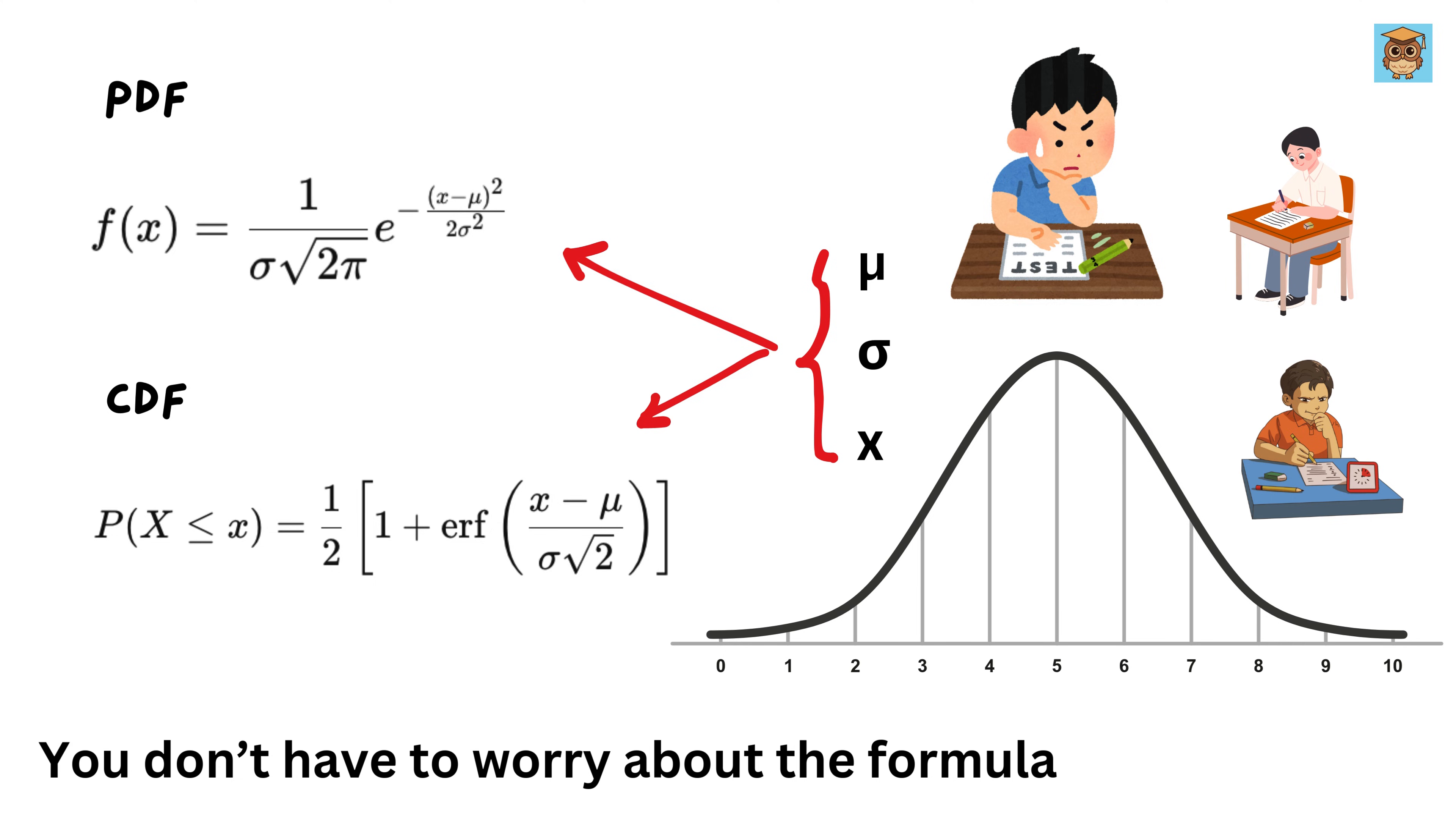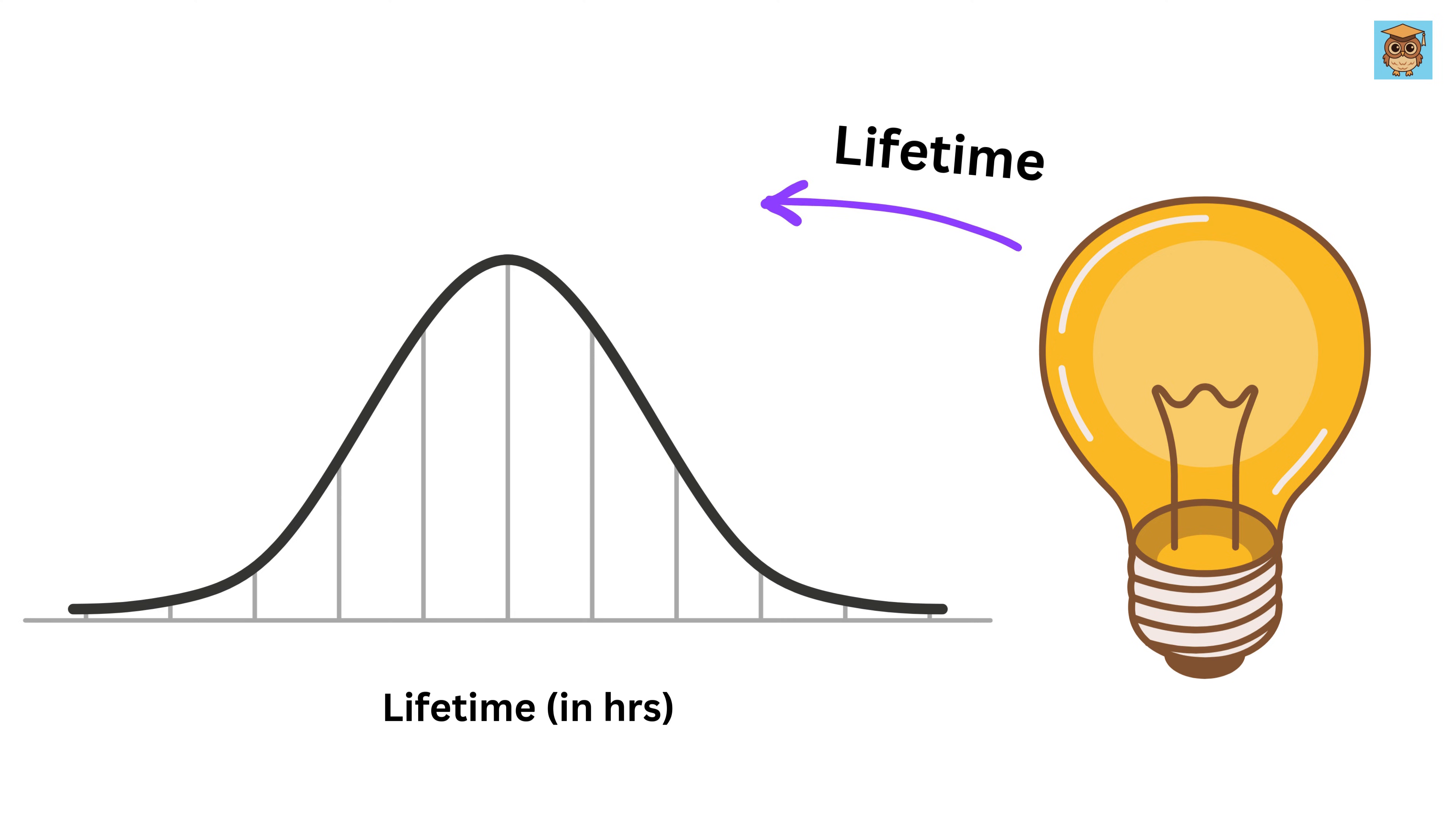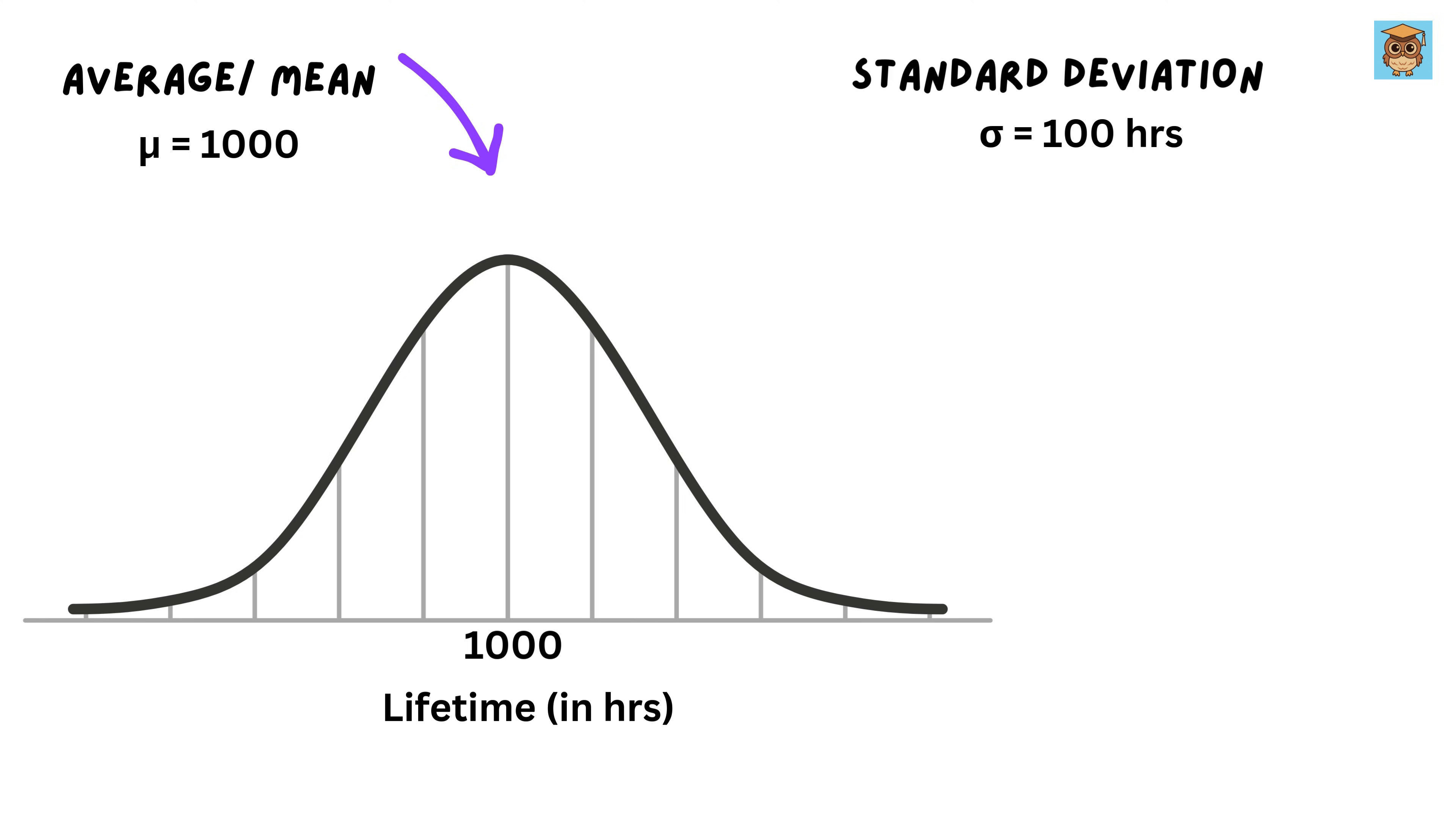Let us solve an example. A company makes light bulbs, and the time each bulb lasts follows a normal distribution, which means most bulbs last around the same time, but some last shorter or somewhere in this region, and some longer or somewhere in this region. The average lifetime of these bulbs is 1,000 hours, and the standard deviation is 100 hours. What percentage of bulbs last between 900 and 1,100 hours?